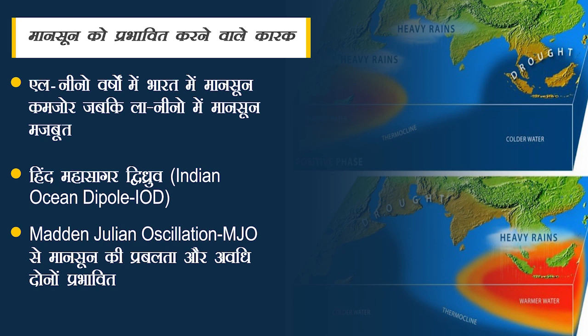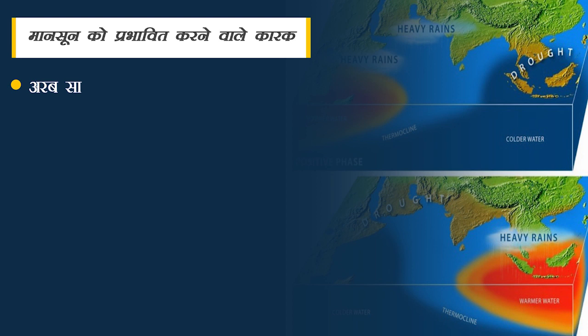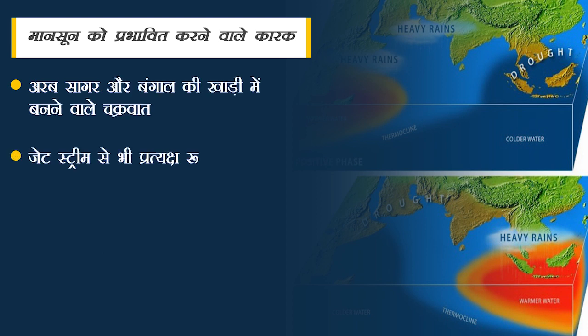जब MJO (Madden-Julian Oscillation) एक छोटे चक्र की समयावधि के रूप में होती है और हिंद महासागर के ऊपर रहती है तो पूरे भारतीय उप-महाद्वीप में अच्छी बारिश होती है। दूसरी ओर जब यह लंबे चक्र की समयावधि के रूप में प्रशांत महासागर के ऊपर रहती है तब भारतीय मानसूनी मौसम में कम बारिश होती है। MJO के चलते महासागरीय बेसिनों में उष्णकटिबंधीय चक्रवातों की संख्या और तीव्रता भी प्रभावित होती है, जिसके परिणामस्वरूप जेट स्ट्रीम में भी परिवर्तन आता है। MJO भारतीय मानसून के संदर्भ में El Niño और La Niña की तीव्रता और गति के विकास में भी योगदान देता है।